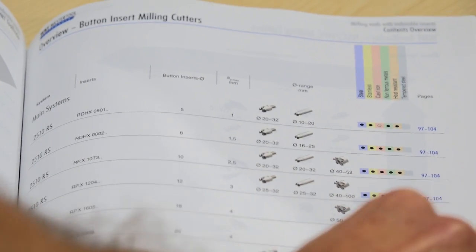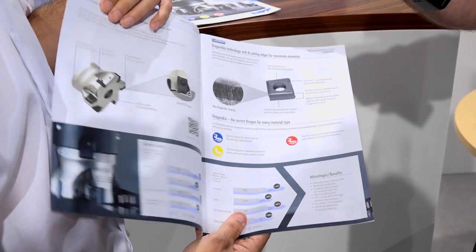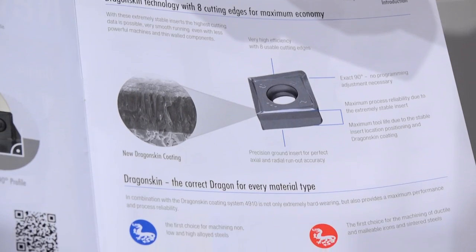Now, over 50,000 products, however you've got a new milling system. What's this all about? Could you tell us what makes it different? It's the new 4910 shoulder milling system. It's basically got eight cutting edges per insert with a true 90-degree angle.